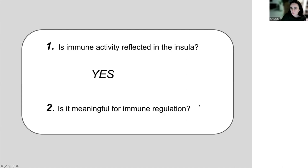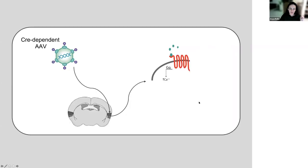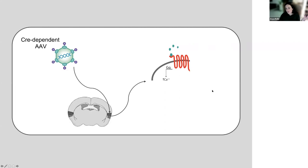But is this activity in the insula meaningful in any way for immune regulation? Instead of just expressing a fluorescent reporter in these neurons, we now express DREADDs — designer receptors exclusively activated by designer drugs — in the captured neurons, allowing us to control them.